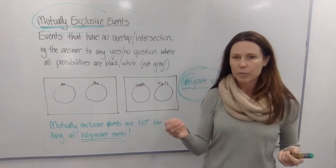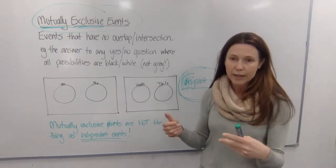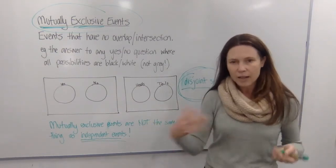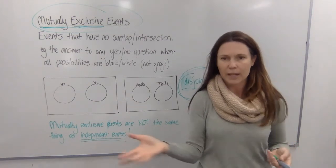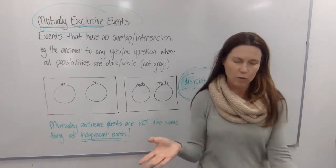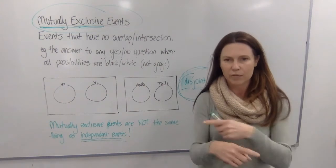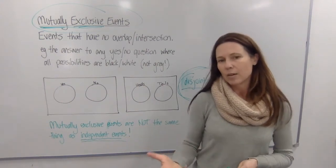For example, if I flip a coin and I toss a die at the same time, the outcome of the coin whether I get heads or tails is really not affected by what number shows up on the die and vice versa. So you'd say that they are independent events.